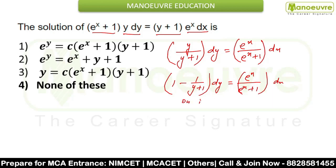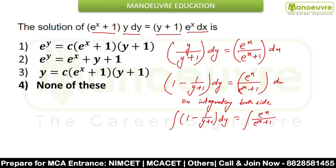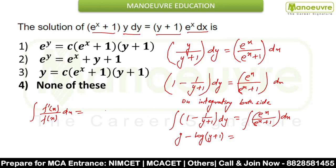Now you have to integrate both sides. On integrating both sides, we get the integral of [1 - 1/(y+1)] dy, which is equal to the integral of e^x / (e^x + 1) dx. The integral of 1 gives y, and the integral of 1/(y+1) will be log(y+1). For the right side, there is a corollary: if you have to find the integral of f'(x) / f(x) dx, then this value is equal to log|f(x)| + C.